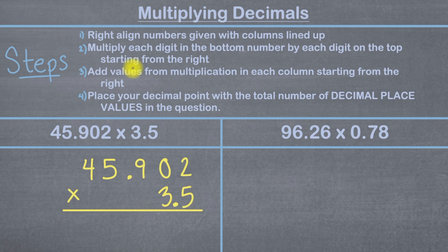So now we can go to step two, which is to multiply each digit in the bottom number by each digit on the top, starting from the right. Here's what that means. I'm going to look at my bottom number here, which is 3.5. I'm going to look at this first number in the right of it, which is a five. I'm going to take this five and multiply it by each digit in the top number one at a time. So first I've got five times two, which is 10.